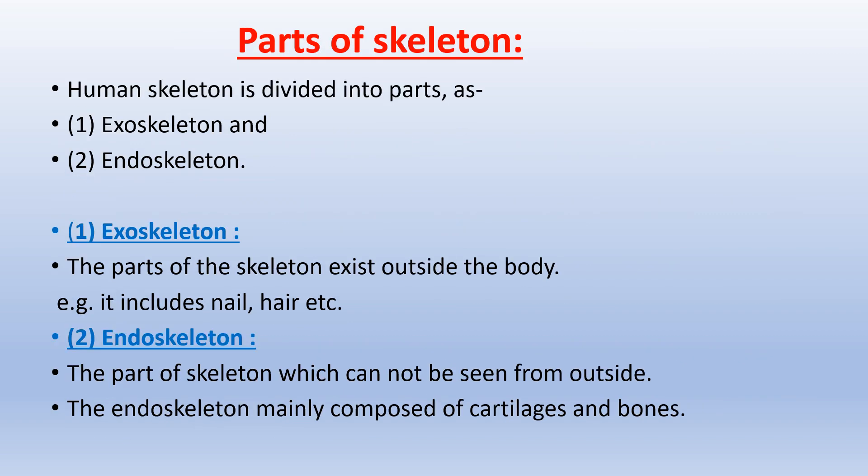Parts of Skeleton: The human skeleton is divided into two parts — exoskeleton and endoskeleton. Exoskeleton refers to the parts of the skeleton that exist outside the body, including nail and hair. Endoskeleton refers to the part of the skeleton which cannot be seen from outside. The endoskeleton is mainly composed of cartilages and bones.